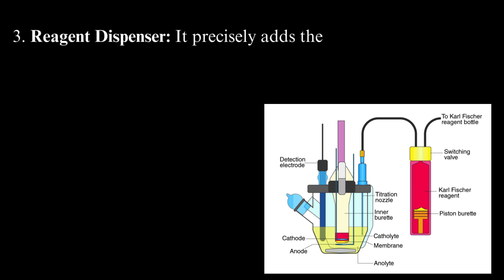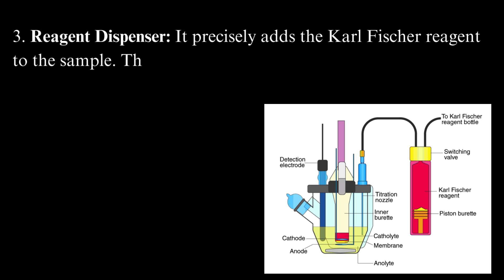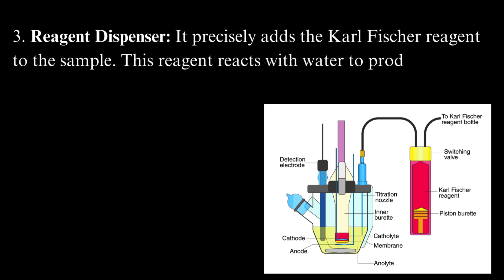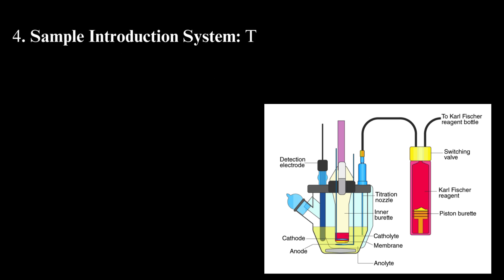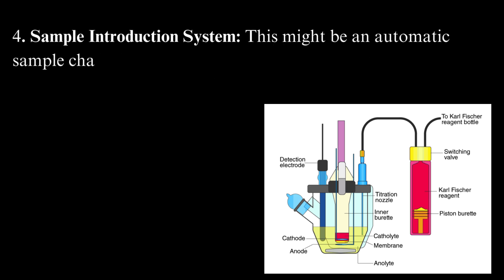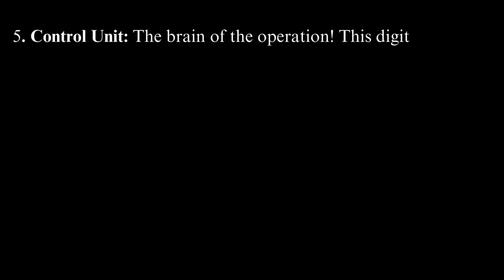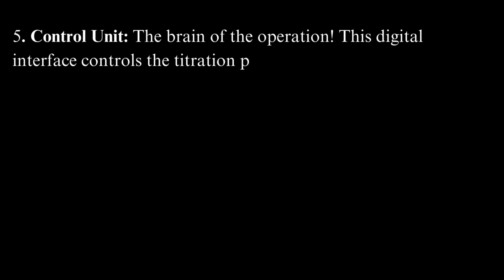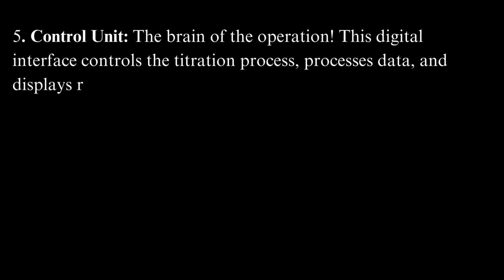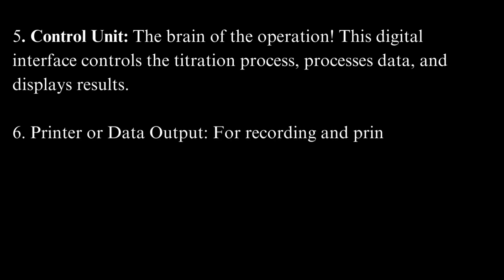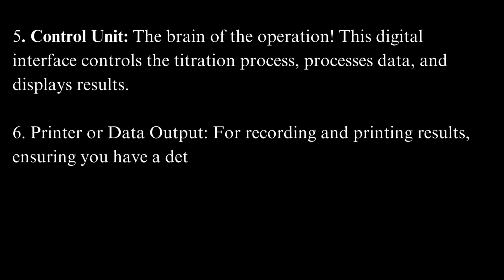Reagent dispenser: it precisely adds the Karl Fischer reagent to the sample; this reagent reacts with water to produce a measurable electrical signal. Sample introduction system: this might be an automatic sample changer or a manual injection system, ensuring accurate and consistent sample handling. Control unit: the brain of the operation — this digital interface controls the titration process, processes data, and displays results. Printer or data output: for recording and printing results, ensuring you have a detailed record of each analysis.